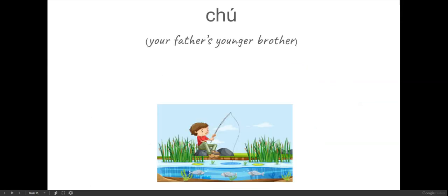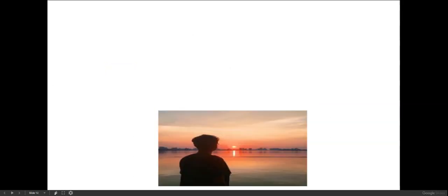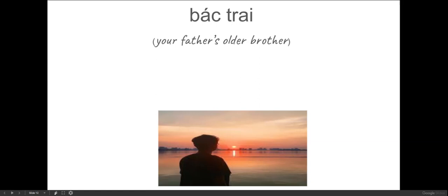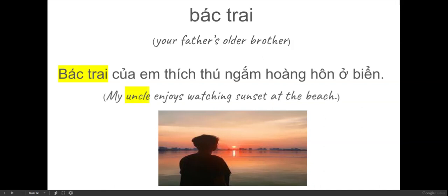Chú means your father's younger brother. For example, chú Tòng hay thích đi câu cá ở hồ — that means Uncle Tòng likes to fish at the lake. Bác trai means your father's older brother. For example, bác trai của em thích thú ngắm hoàng hôn ở biển — that means my uncle enjoys watching the sunset at the beach.